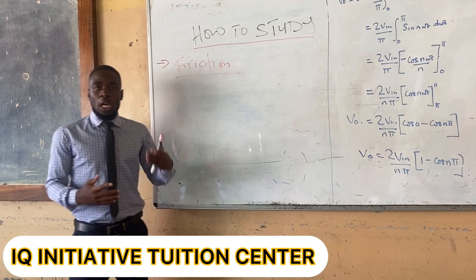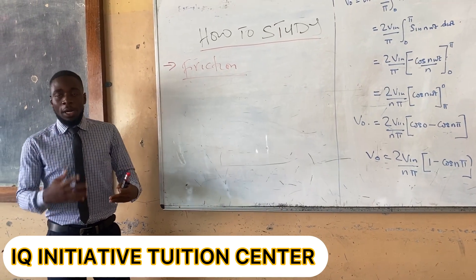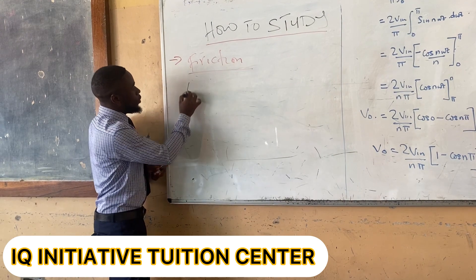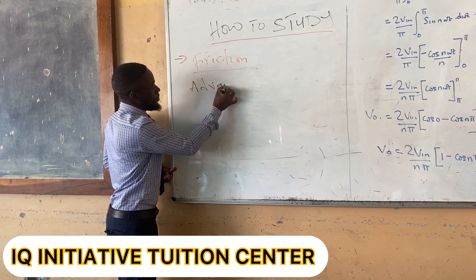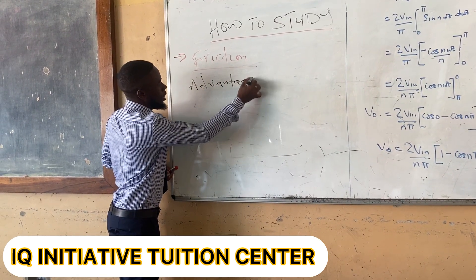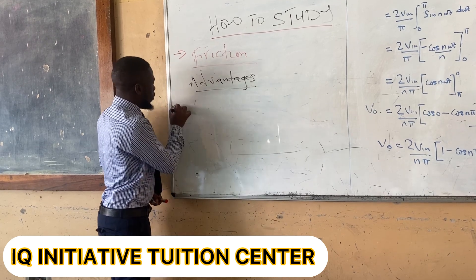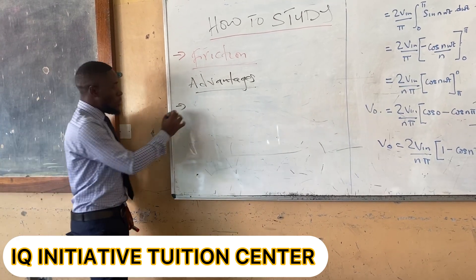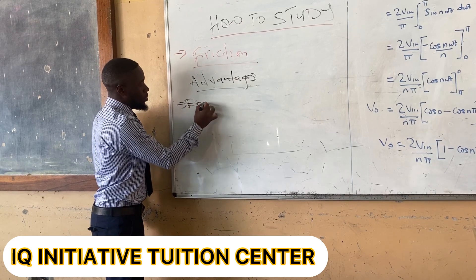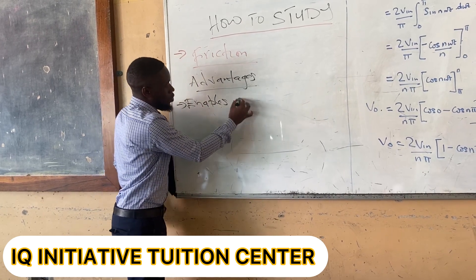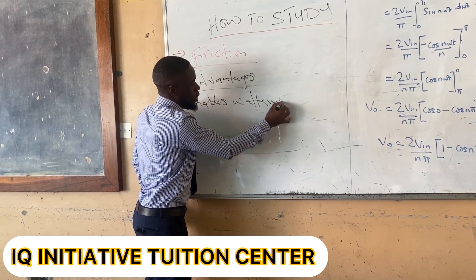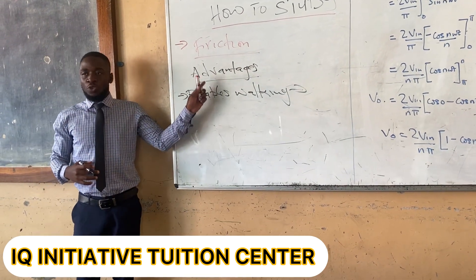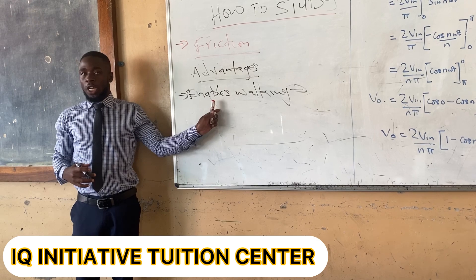Friction is a force that opposes motion. Now let's go to the advantages and disadvantages of friction. Starting with advantages: the first advantage is that friction enables walking. For some people, it is very difficult to remember this most often — 'enables walking.'